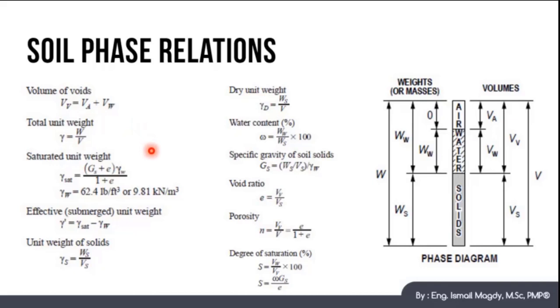Saturated unit weight gamma saturated equals Gs plus E all multiplied by gamma water all divided by 1 plus E. Where gamma water equals 62.4 pounds per feet cube or 9.81 kN per meter cube. And Gs is the specific gravity of soil solids which equals Ws over Vs all divided by gamma water. And E is the void ratio which equals Vv over Vs.